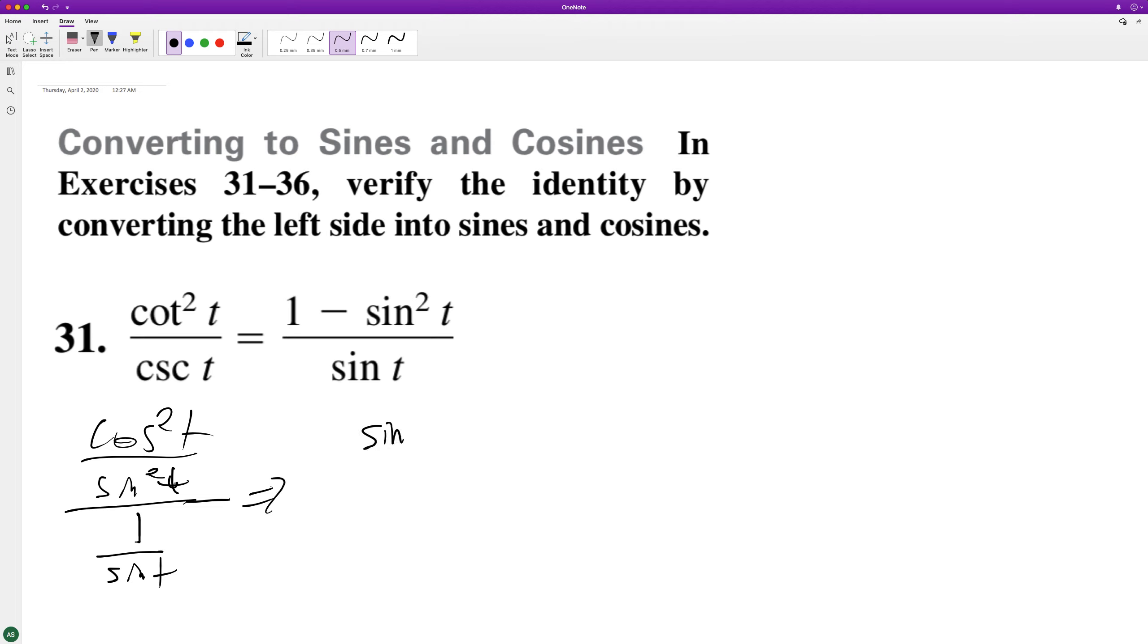This is the same thing as sine of t over 1 times cosine squared t over sine t sine t. Let's cancel.